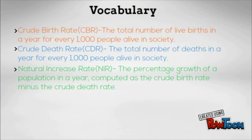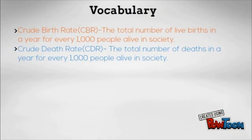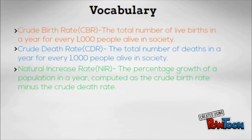The third is the natural increase rate, also known as NIR. This is the percentage by which a population grows in a year. It is computed by subtracting the CBR from the CDR, after first converting the two measures from numbers per 1,000 to percentages. Thus, if the CBR is 20 and the CDR is 5, then the NIR is 15 per 1,000, or 1.5%. The term natural means that a country's growth rate excludes migration.